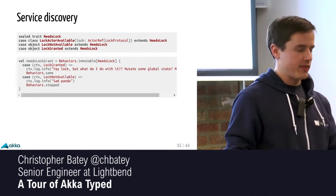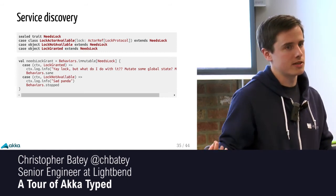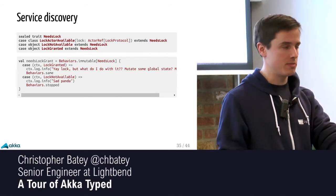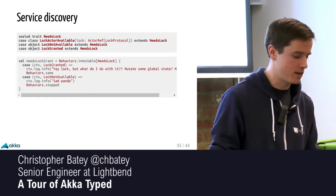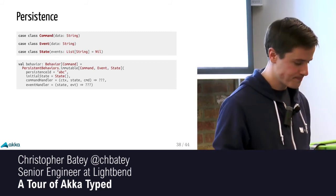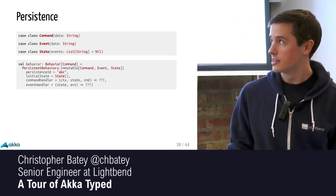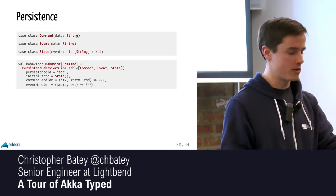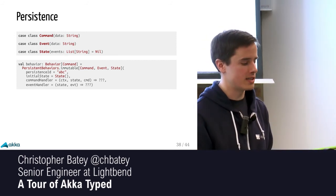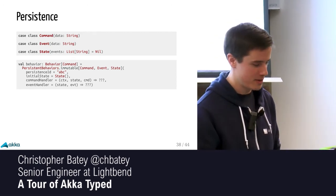If I get a lock not available, I become a new behavior and can stop myself because I couldn't get the lock. Or I can get the lock reference and ask for the actual lock — because the initial reference just represents the lock actor — and map that into either a lock granted or lock not available, which is what our initial behavior was expecting. All of this code is available on a GitHub repository, you can go run it and see whether it gets the lock or not. It's a bit of a spoiler that it does.